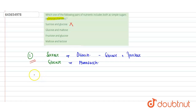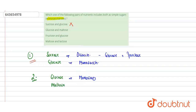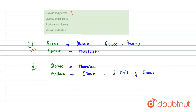Second pair: glucose and maltose. Glucose, as we have seen, is a monosaccharide — the simplest sugar, the simplest carbohydrate. Maltose is a disaccharide, formed of two units of glucose, that is glucose plus glucose makes maltose. So again, this is a wrong option.